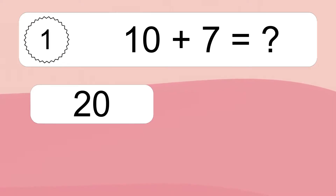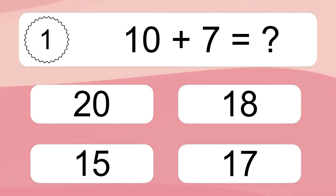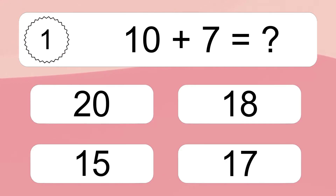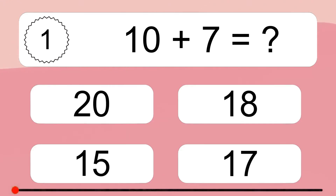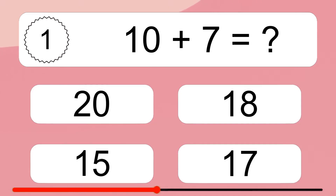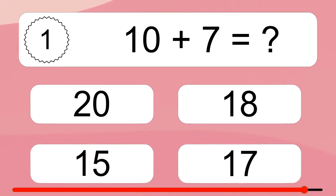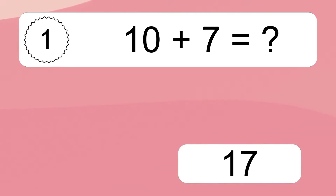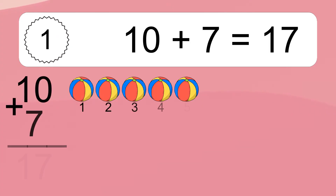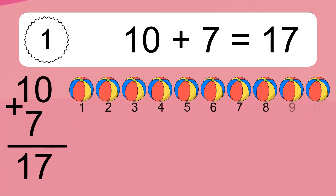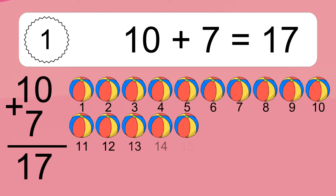10 plus 7 equals what? 10 plus 7 equals 17.